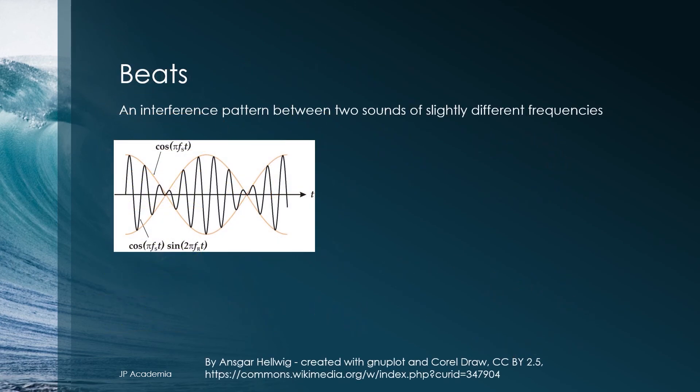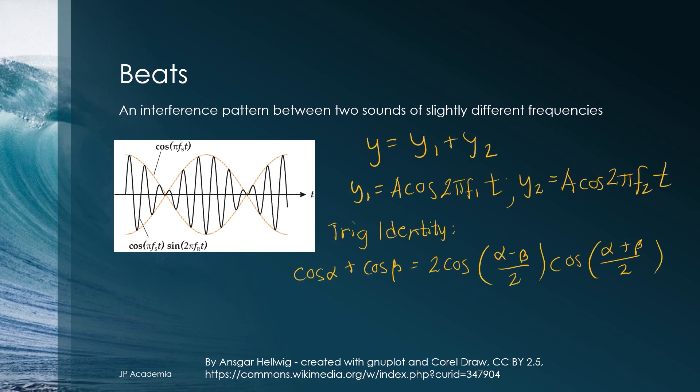Beats in acoustics is an interference pattern between two sounds of slightly different frequencies. The figure here shows the superposition of two waves. Let us say we are at the origin of the two waves Y1 and Y2 with frequencies F1 and F2 respectively. Using this trigonometric identity of adding two cosine functions shown, we can produce this expression for the Y which refers to the beats.